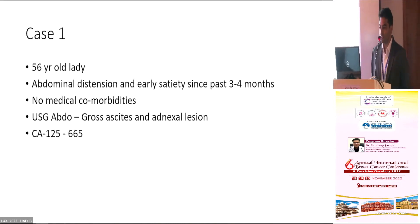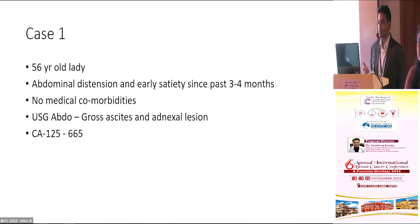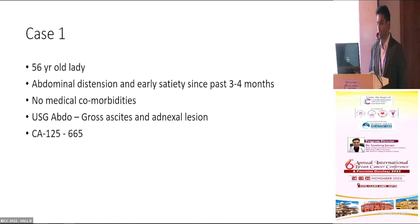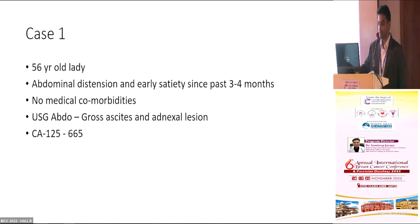We all heard what Dr. Vinnie Talwar said — his talk was quite clear in terms of the trials and guidelines we have and how to apply them. But how do we put it into day-to-day clinic, especially in a resource-challenged setting? A typical case: a mid-50s lady with non-specific complaints for three to four months, reasonably fit, no medical comorbidities. Ultrasound abdomen shows gross ascites, adnexal lesion, and CA-125 of 665.